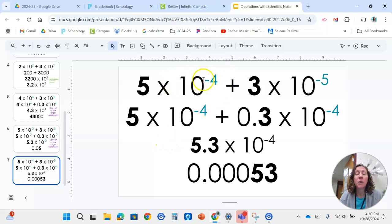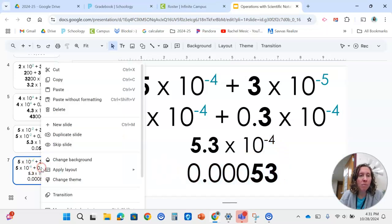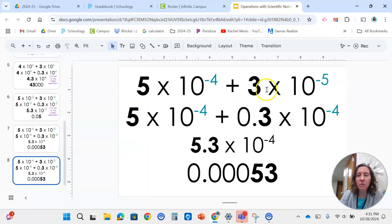For this one here, negative 4 is the greater number. So we would convert this one to negative 4 by shifting that decimal one to the left. Then 5 plus 0.3 is 5.3, and we keep the exponent of negative 4. That would be the answer in standard form. Now I just realized there isn't anything with subtracting, so I'm going to redo this one.